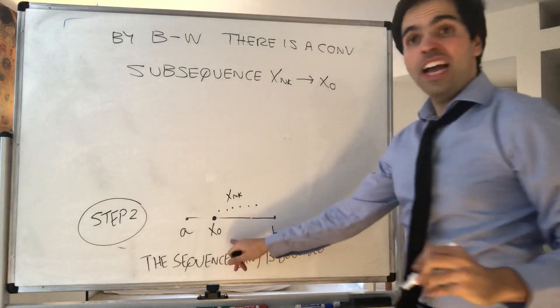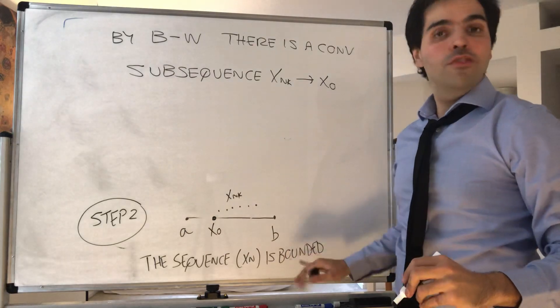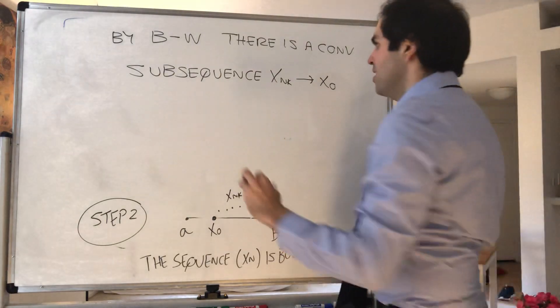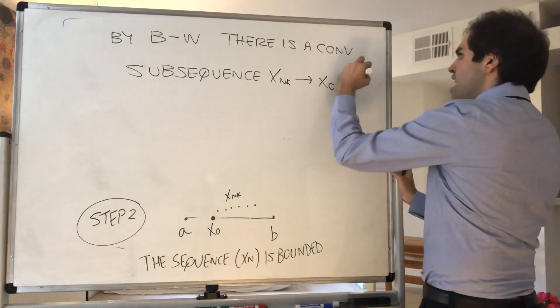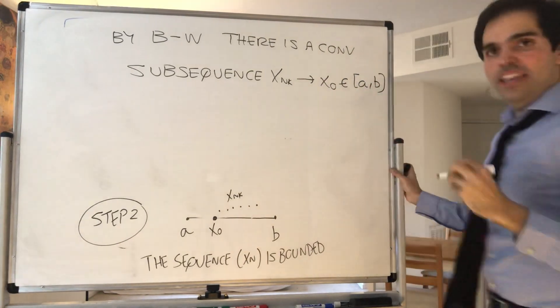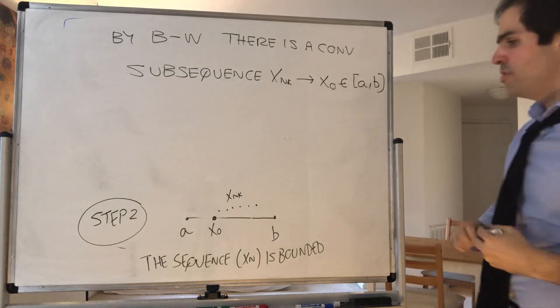So here we have the sequence xₙ, and from this we can extract some convergent subsequence x_nₖ that goes to some x₀. Now, in general, the limit doesn't have to be in the interval, but remember it's a closed interval. So since [a,b] is closed, we actually get that x₀ is in [a,b], and this will be important.